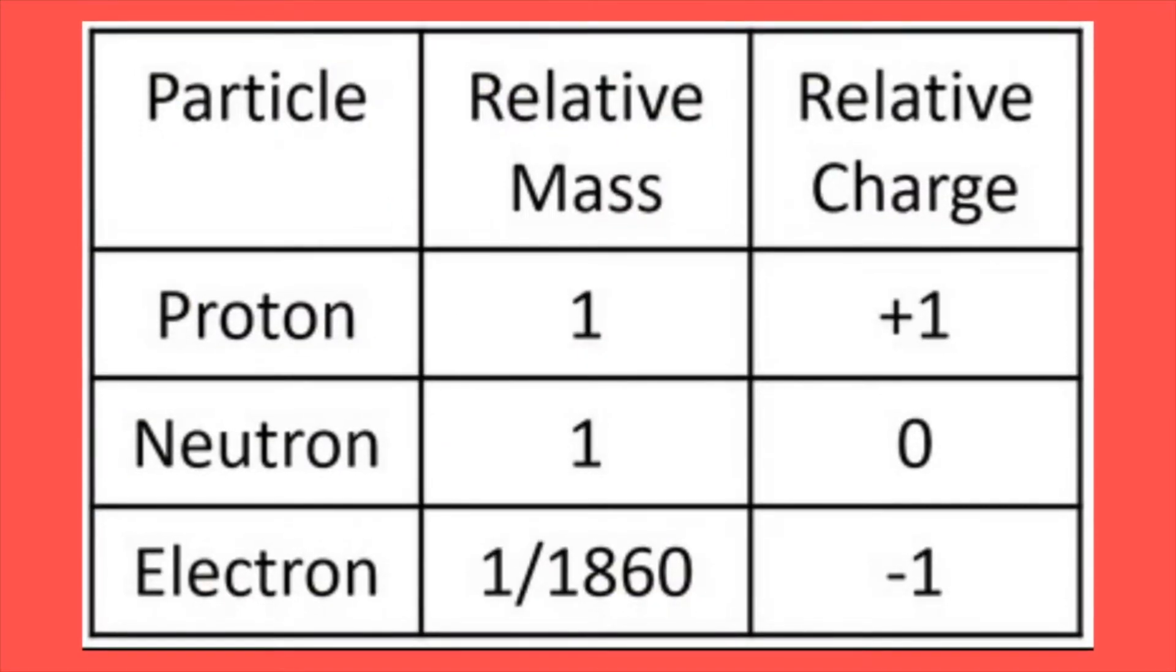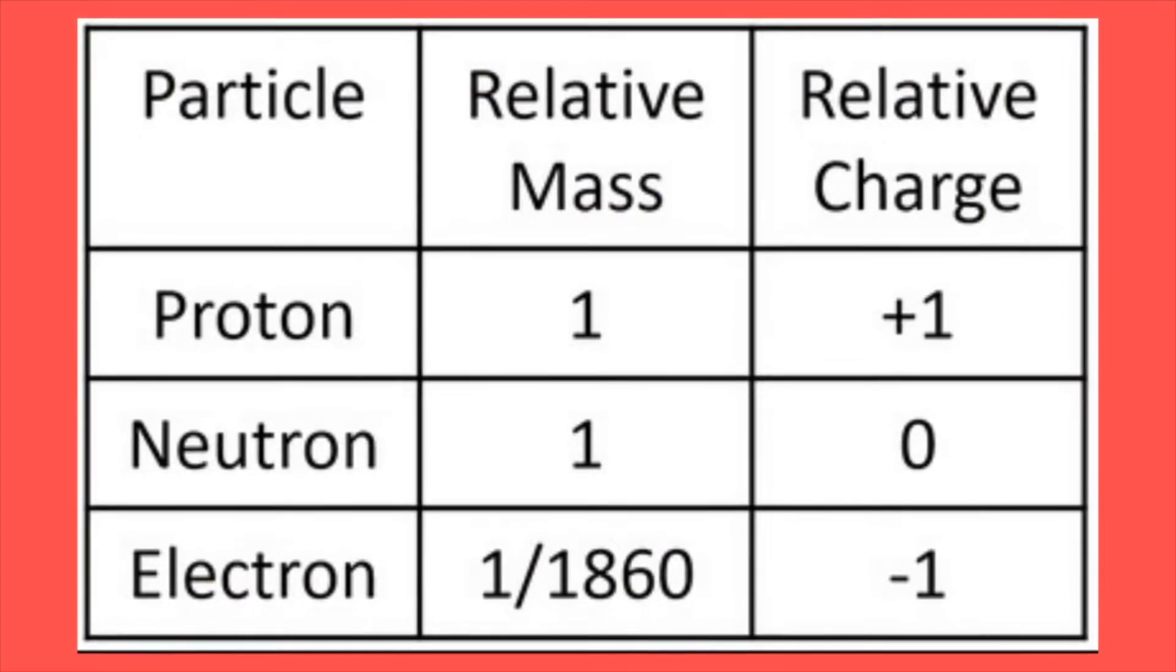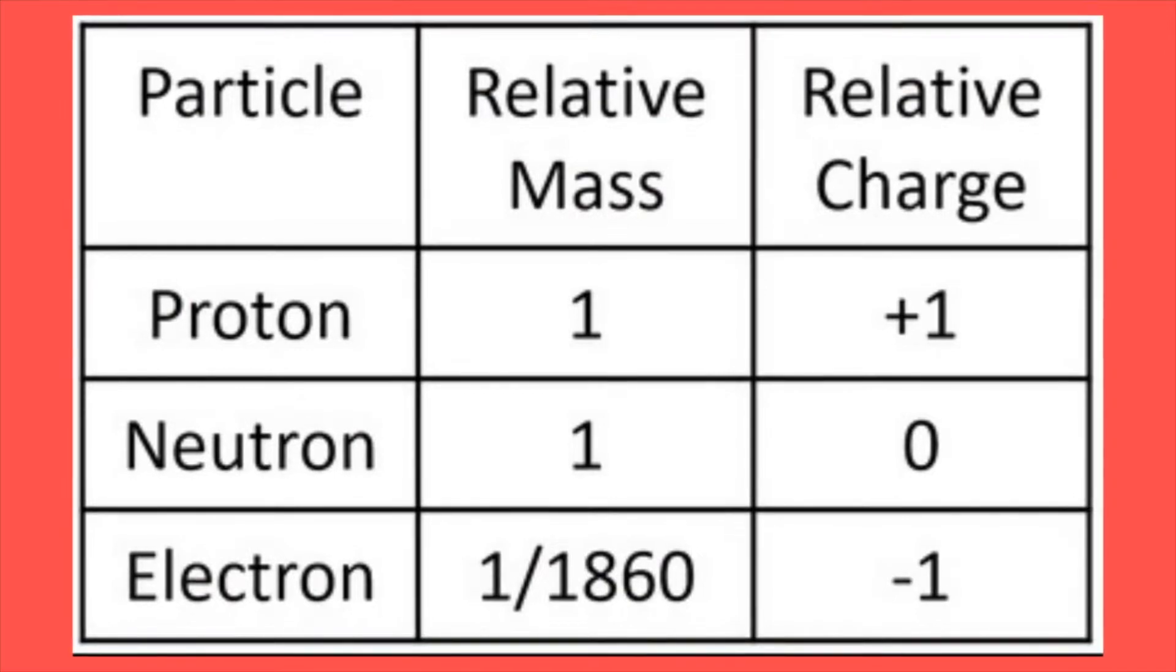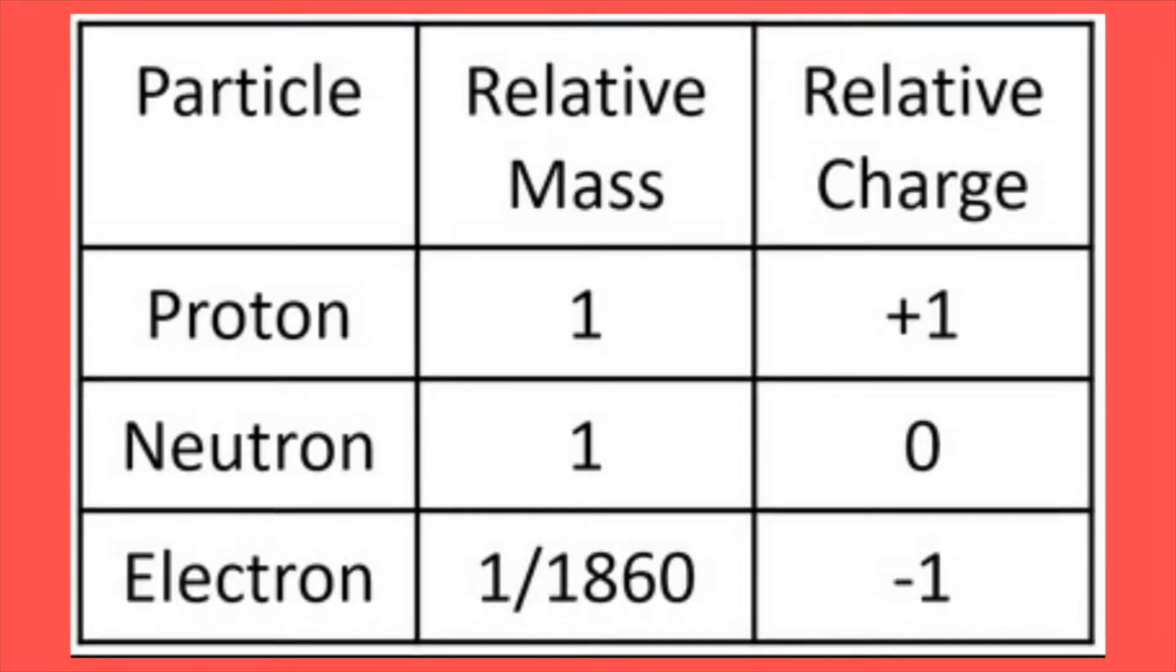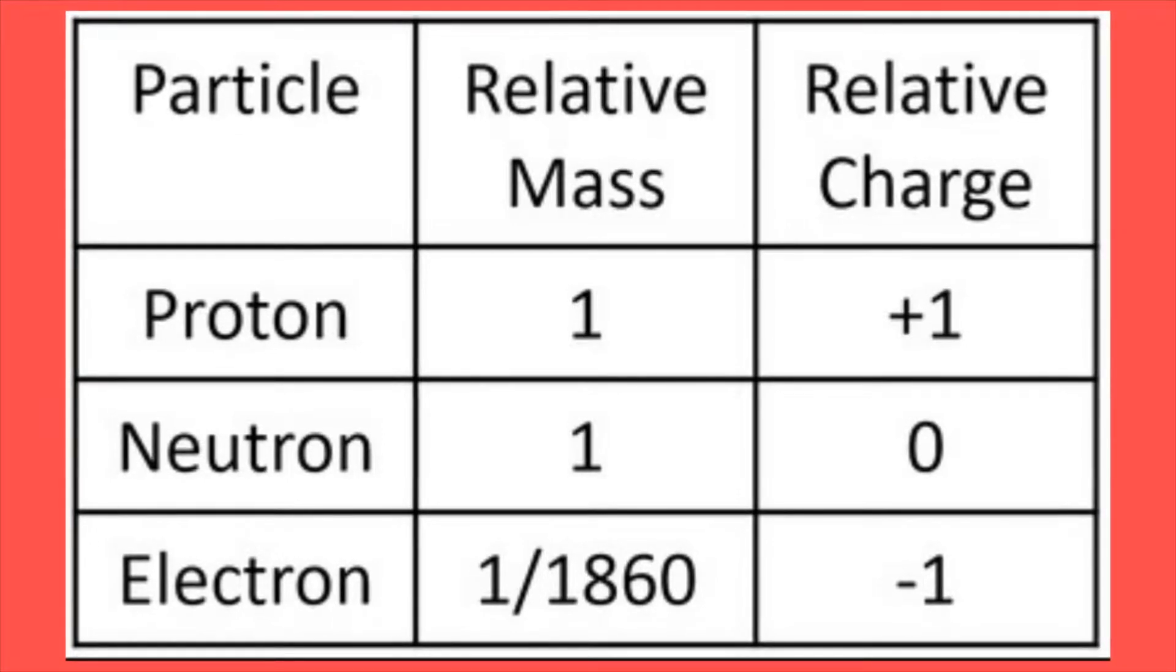Both protons and neutrons have a relative mass of 1, while an electron has a mass of 1 divided by 1860. The relative charge of a proton is plus 1, and the charge of an electron is minus 1, while a neutron has zero relative charge.